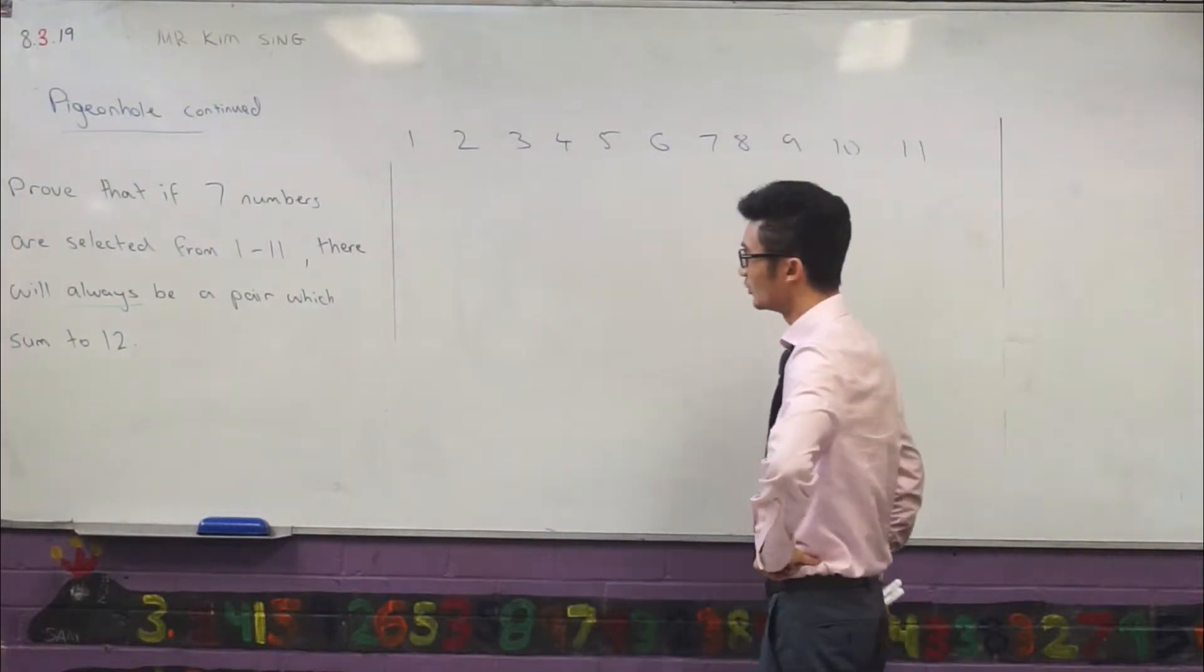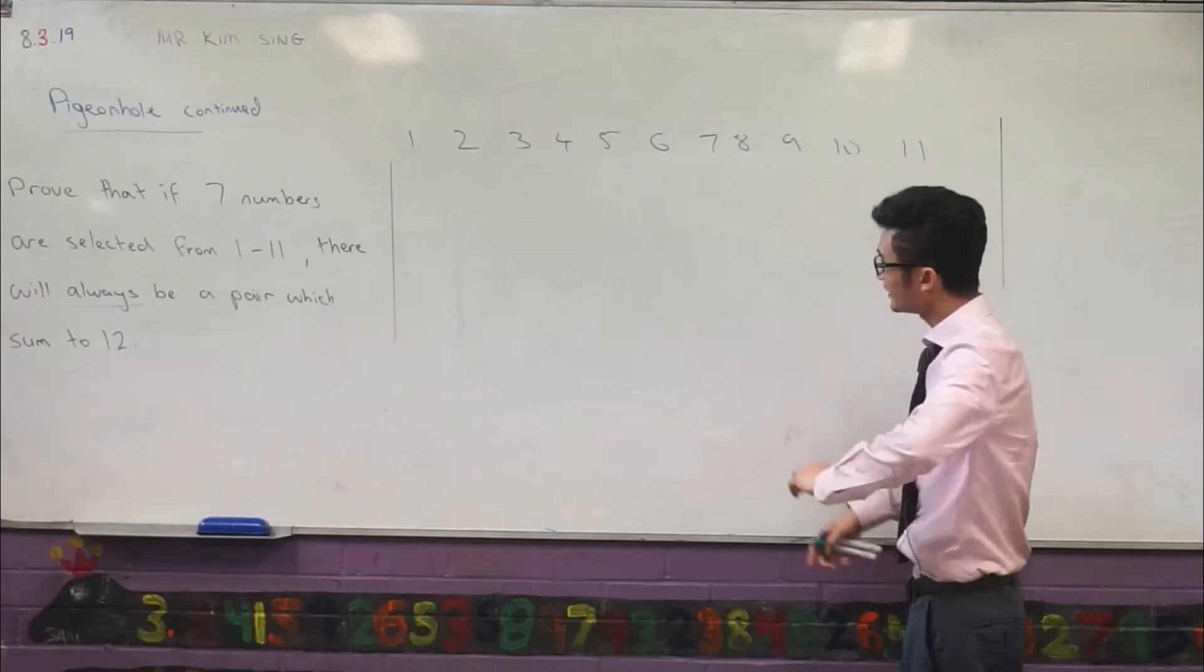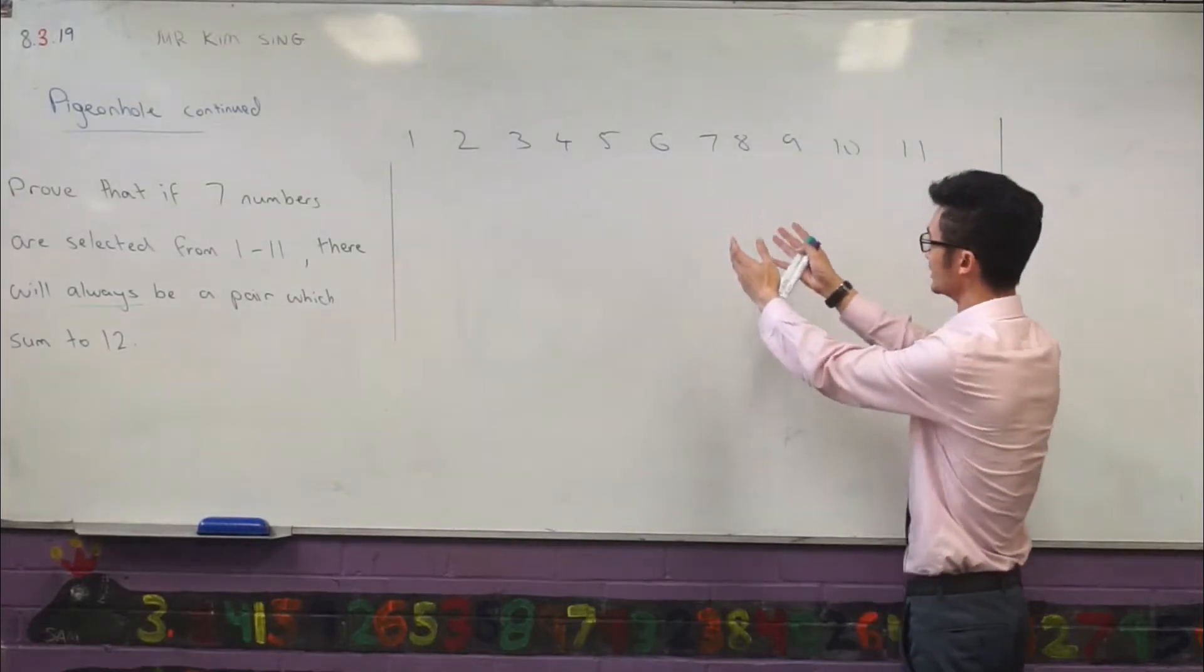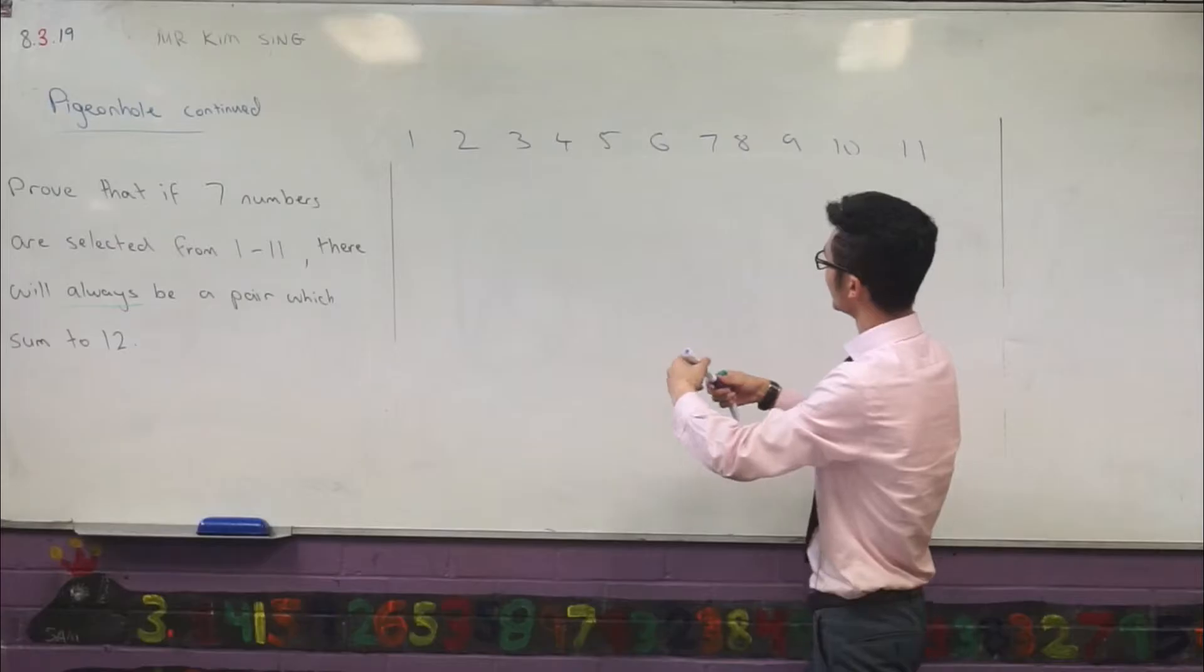In this case, we want to show that there will always be a pair which sums to 12. I think there's a bit of intuition. Again, when I'm looking at this, I can see why this is actually happening. If you look at...